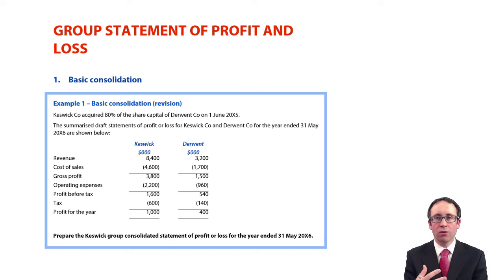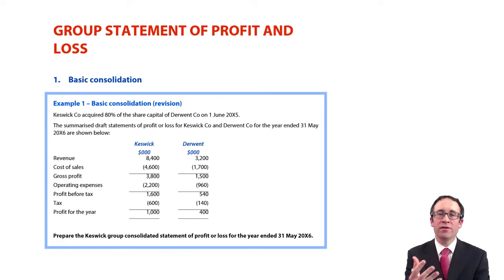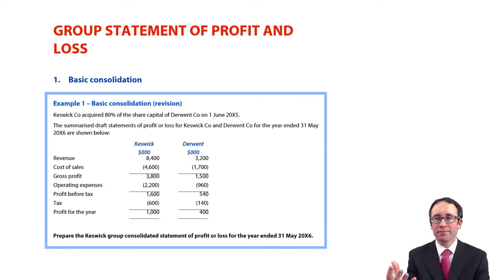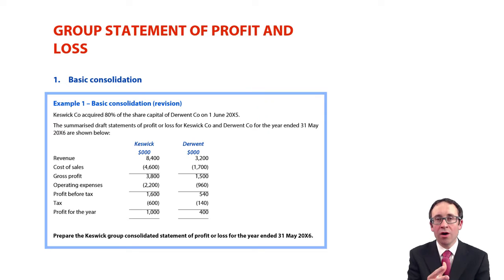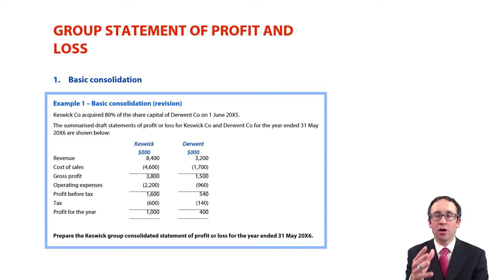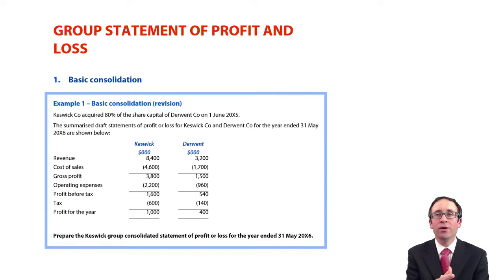If the parent has control over the subsidiary, we are going to consolidate the revenues and the costs 100% line by line. However, the parent may not own all of the subsidiary, so therefore they will need to go through and show the share of the subsidiary's profits for the year that they do not own.